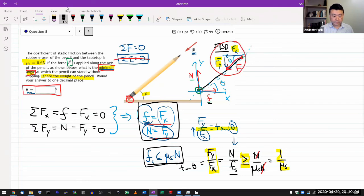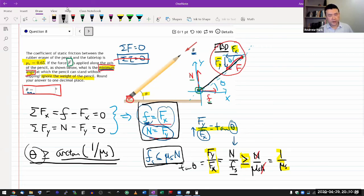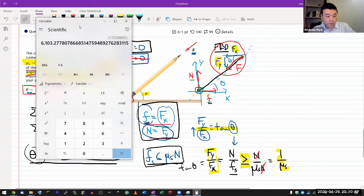All of this leads to us saying theta has to be greater than or equal to arc tangent of 1 over mu S. So the theta that they're looking for is the theta that satisfies this condition here. If you are at an angle smaller than this, then this static equilibrium condition cannot be satisfied. There's not enough friction force to maintain the static equilibrium condition. So let's work out that angle and plug that in.